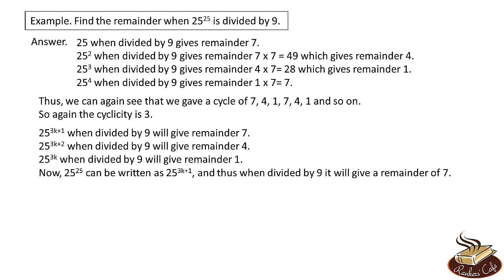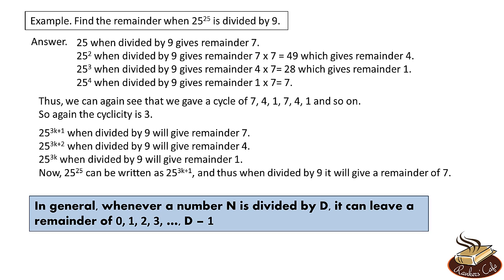As you can see, cyclicity of remainders seems like an awesome way to find remainders, and it really is. However, cyclicity of remainders has a serious drawback. For any divisor D, its remainders can take values between 0 and D-1. Now if D is large, we can have a case where the cycle is too large. In our first example D was 7, so the remainder can theoretically have values between 0 and 6, making the maximum cyclicity 7. As we saw, for 2 raised to 1059 divided by 7, the cyclicity was 3. Similarly, in the second example, the maximum value of cyclicity can be 9, and for 25 raised to 25 the cyclicity was 3.